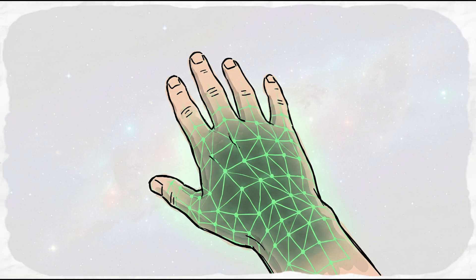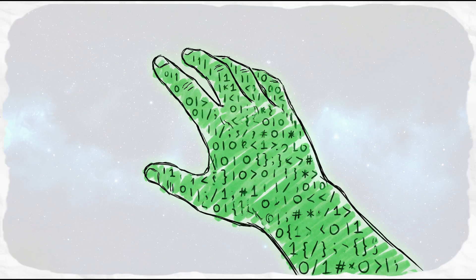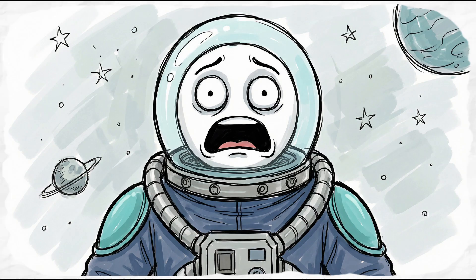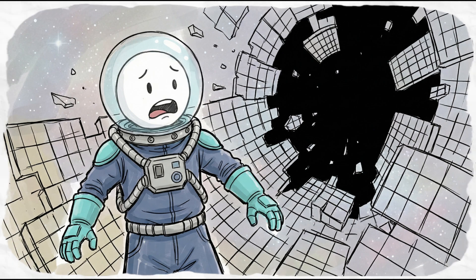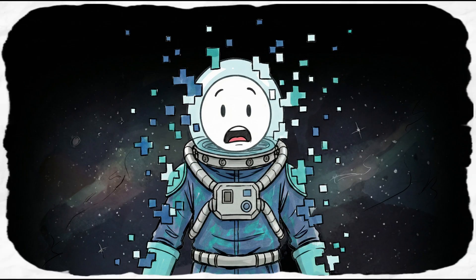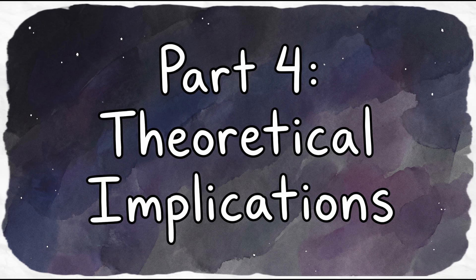Look at your hand. If this is a sim, those aren't biological fingers. That is rendered code. And that sounds cool until you realize that if any of this is actually true, things get dark fast. Part 4, theoretical implications.